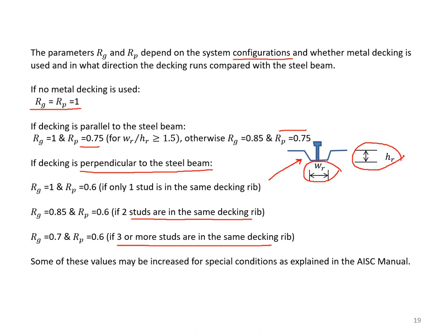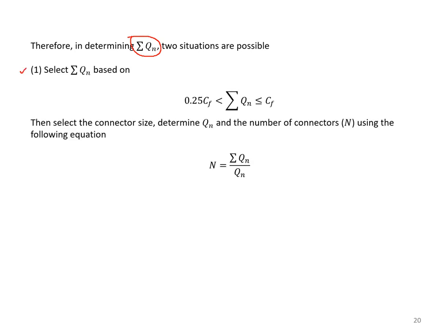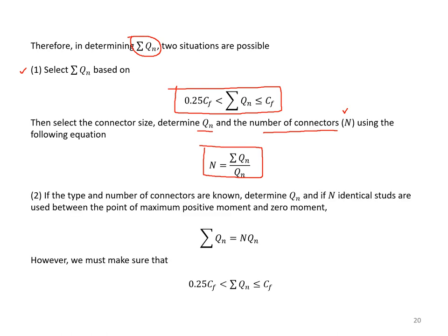Some of these values may be increased for special conditions as explained in the AISC manual. In determining sigma-QN, two situations are possible. First, select sigma-QN based on the inequality discussed, then select connector size, determine QN, and find the number of connectors n using n equals sigma-QN divided by QN. Second, if the type and number of connectors are known, determine QN, and if n identical studs are used between the point of maximum positive moment and zero moment, then sigma-QN equals n times QN — but must remain within the two limits discussed.